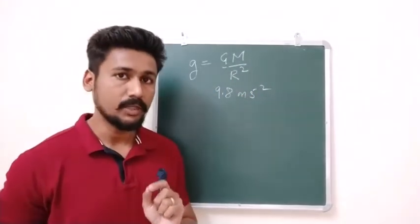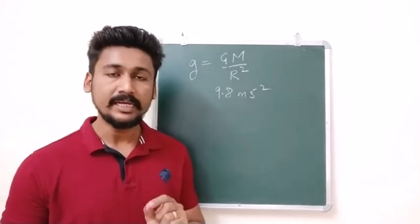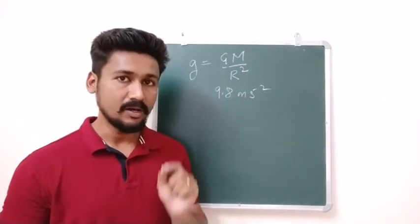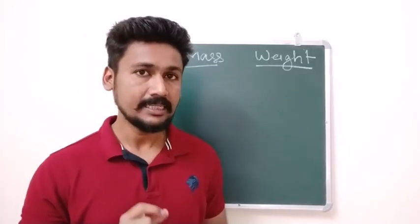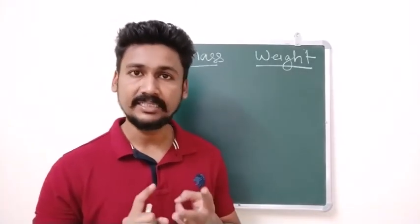the average value for this g is 9.8 meter per second square. So this value make sure that you are remembering. Today we will talk about the concept of mass and weight. So let us understand the concepts of mass and concept of weight.